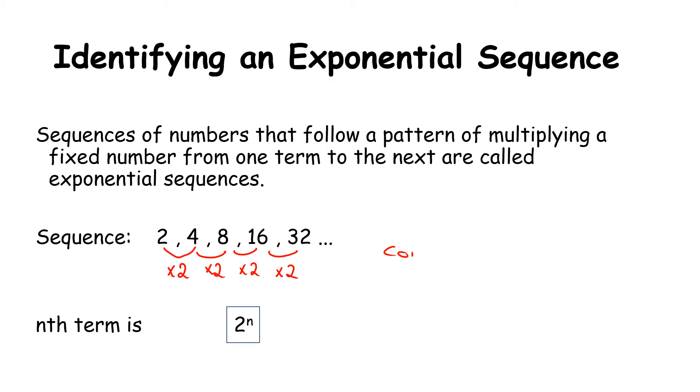This is now known as a common ratio as opposed to a difference. Differences when we take two numbers away, this is instead talking about when we divide two numbers. So that 2 is our common ratio. So we simply use 2 to the power of n.